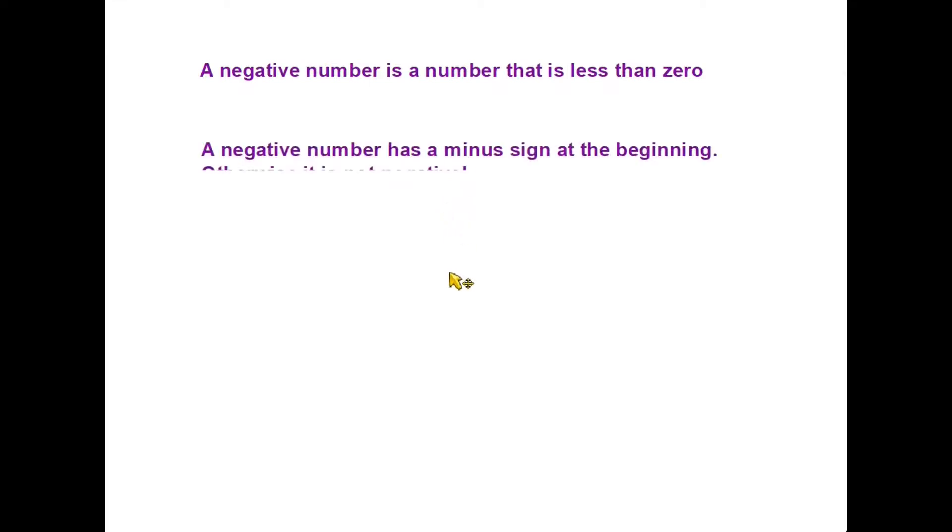Because of the amount of confusion I see in classrooms about negative numbers, I just want to start with three little rules. The first of those is that a negative number is a number that is less than zero. The second one is that a negative number has a minus sign at the beginning. Otherwise it is not negative.